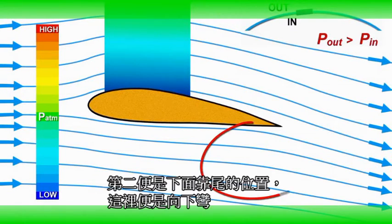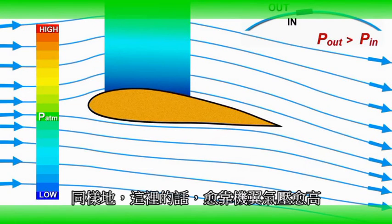The second curvature is at the bottom of the airfoil, near the tail. This is also curved downward. So here, if we move toward the airfoil, the pressure should increase.